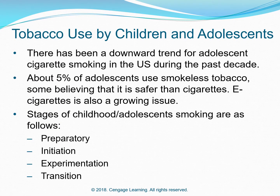Tobacco use by children and adolescents: There has been a downward trend for adolescent cigarette smoking in the U.S. during the past decade. About 5% of adolescents use smokeless tobacco, some believing it is safer than e-cigarettes. E-cigarettes are also a growing issue. Stages of childhood and adolescent smoking are: preparatory, initiation, experimentation, and transition.